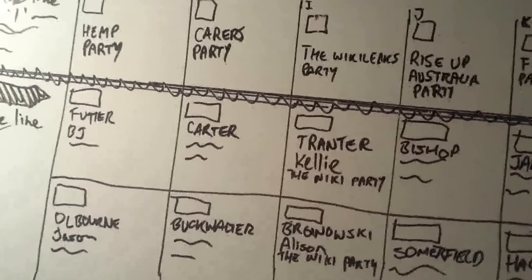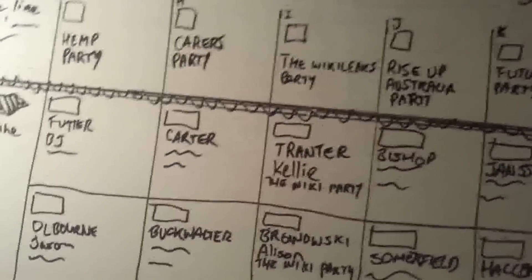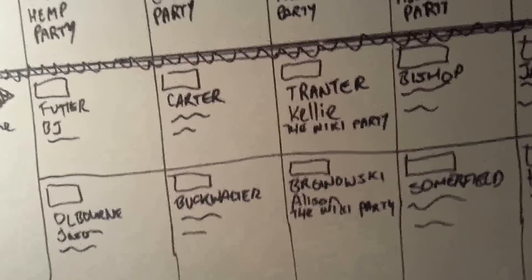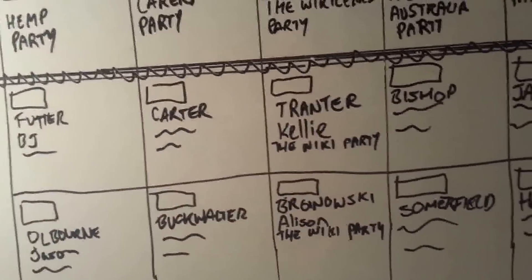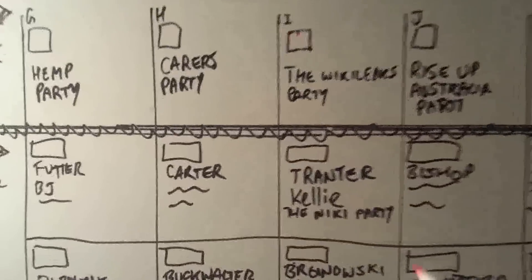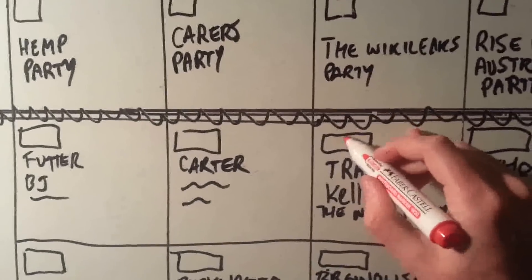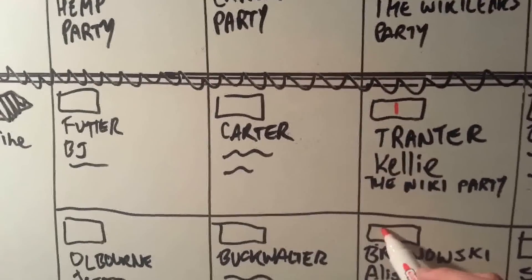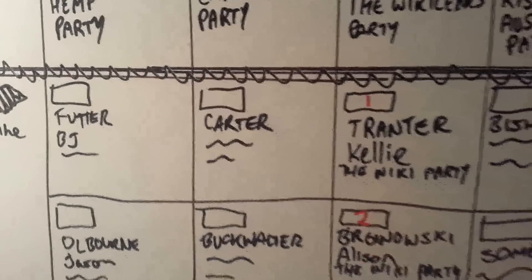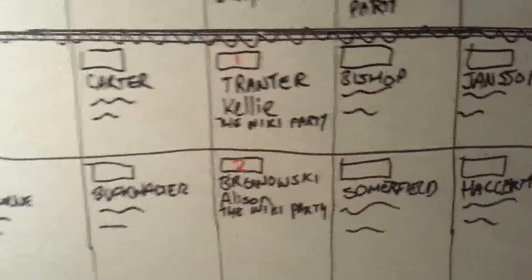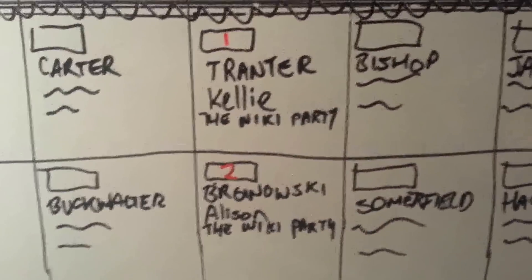We can actually use that to our advantage — I'm going to show you how. So we know who we want to vote for, so we put our first preference in, then our second preference in. Now we've got 110 of these to fill out for New South Wales, so we might go through and put a couple more in.